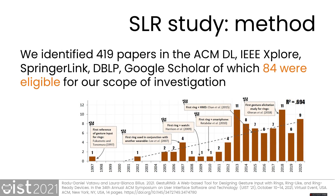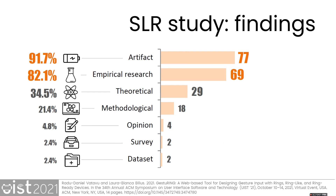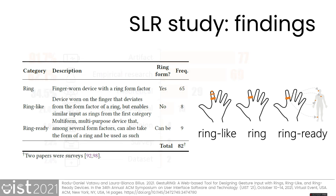For our systematic review, we followed best practices from the literature and identified more than 400 papers in several scientific databases. Of these, 84 papers met our requirements for gesture input with ring devices. We found that most of the contributions from the literature were about artifacts, such as new ring devices, that are often accompanied by empirical results from user studies and evaluations. We also found two datasets and two survey contributions.